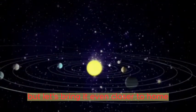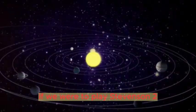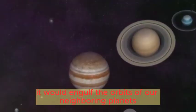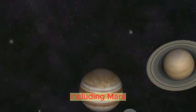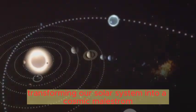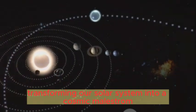But let's bring it even closer to home. If we were to place Stevenson 2-18 at the center of our solar system, it would engulf the orbits of our neighboring planets, including Mars. That's right, this star is so colossal it would swallow Mars and everything else within its orbit, transforming our solar system into a cosmic maelstrom.